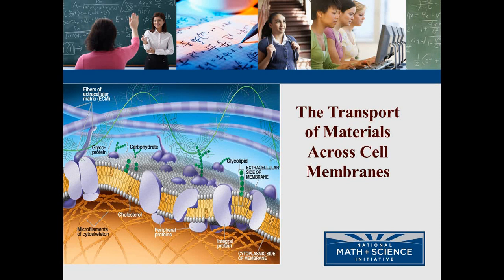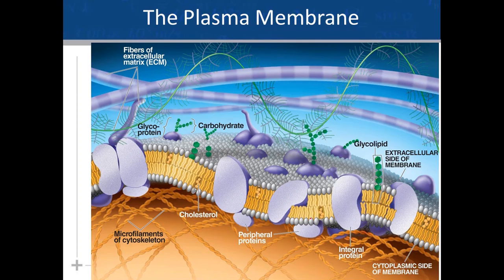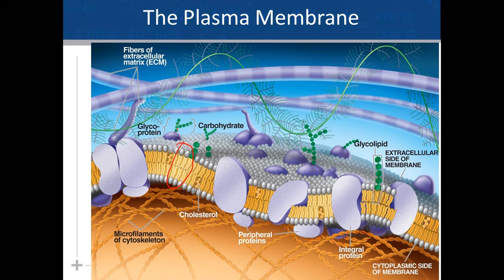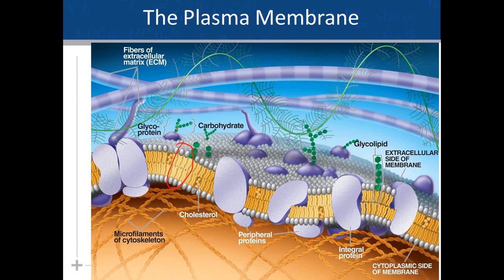Hello, my name is Carol Leibel, and today we're going to examine how materials cross the cell membrane. You've seen this illustration before — it's of a plasma membrane. The structure of a plasma membrane is composed of a bilayer of phospholipids. Inserted into that bilayer are proteins, kind of like a mosaic. So this is called the fluid mosaic model of the plasma membrane.